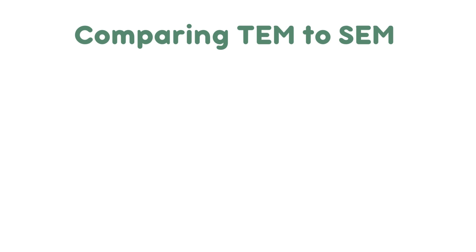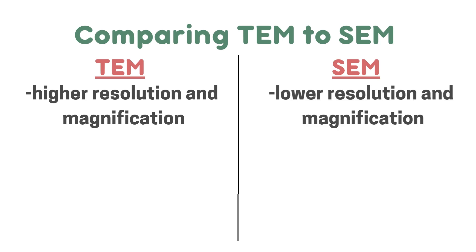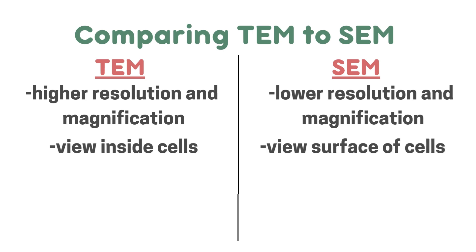Now we're going to compare transmission electron microscopes to scanning electron microscopes. A TEM has a higher resolution and magnification, while an SEM has a lower resolution and lower magnification. A TEM can have a magnification of up to one million. A TEM is used to view inside cells, and an SEM is used to view the outside surface of cells. A good way to remember this is that the S in SEM could stand for surface. Transmission electron microscopes produce 2D images, and scanning electron microscopes produce 3D images.